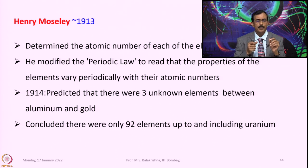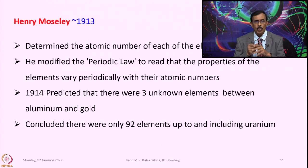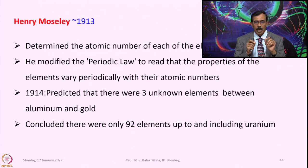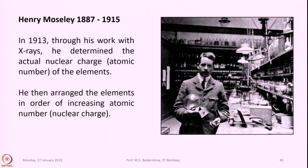In 1914, he predicted that there were three unknown elements between aluminum and gold, and he concluded that there were only 92 elements up to and including uranium. In 1913, through his work with X-rays, he determined the actual nuclear charge of the elements and arranged them in order of increasing atomic number, that is nuclear charge.